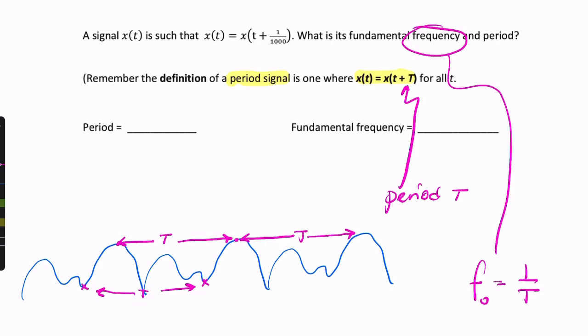And we're told that x of t is equal to x of t plus 1 over 1000. So basically, we're indirectly being told that the period is 1 over 1000. So that is my period. So my period is 1 over 1000, or 1 millisecond.